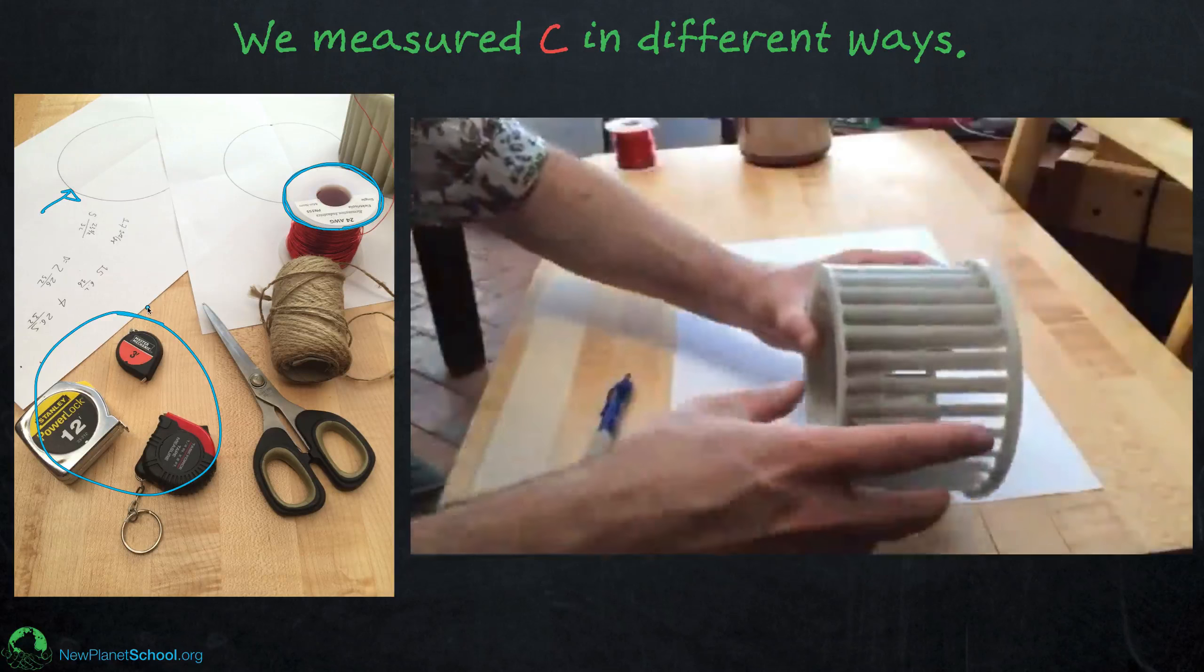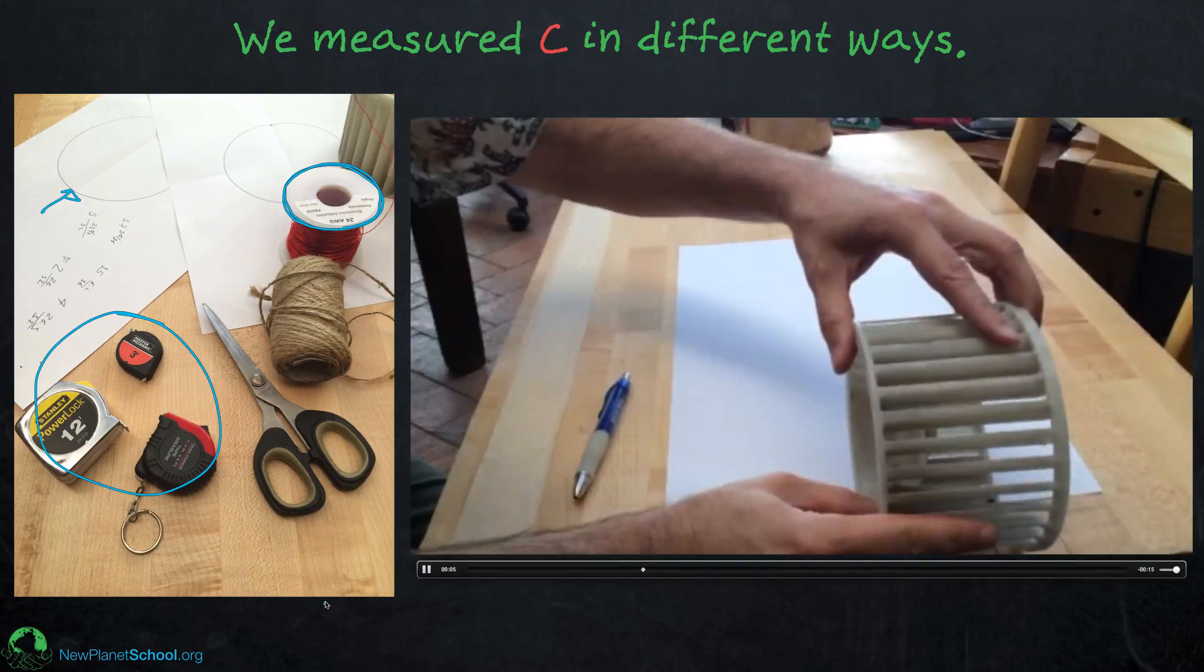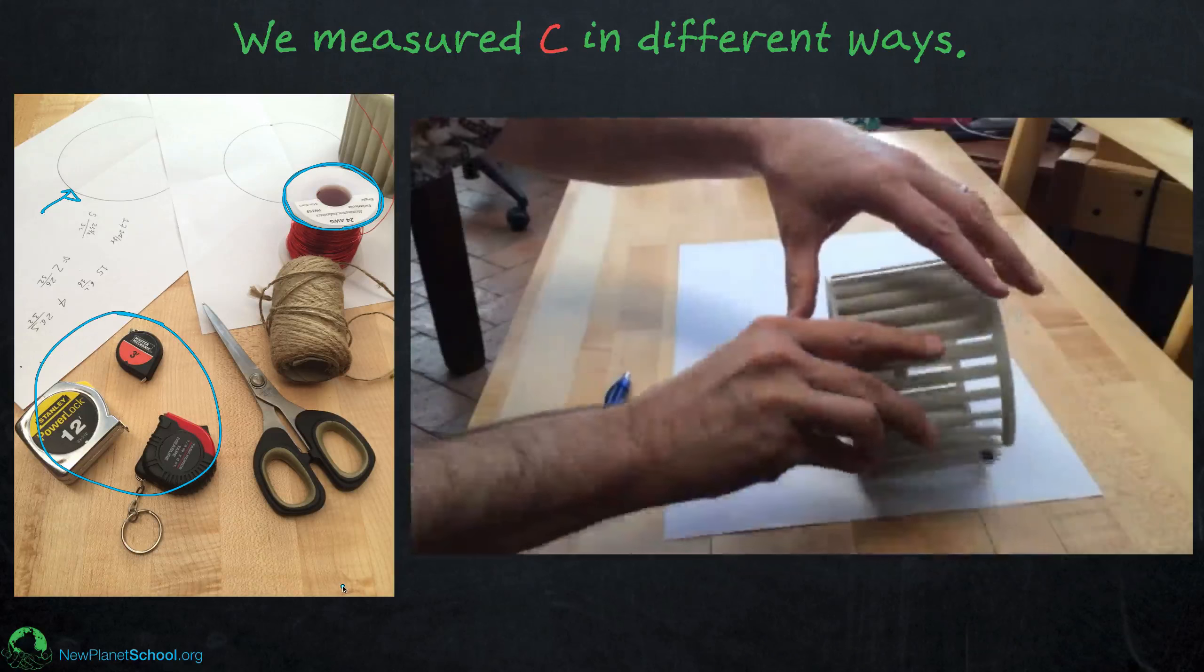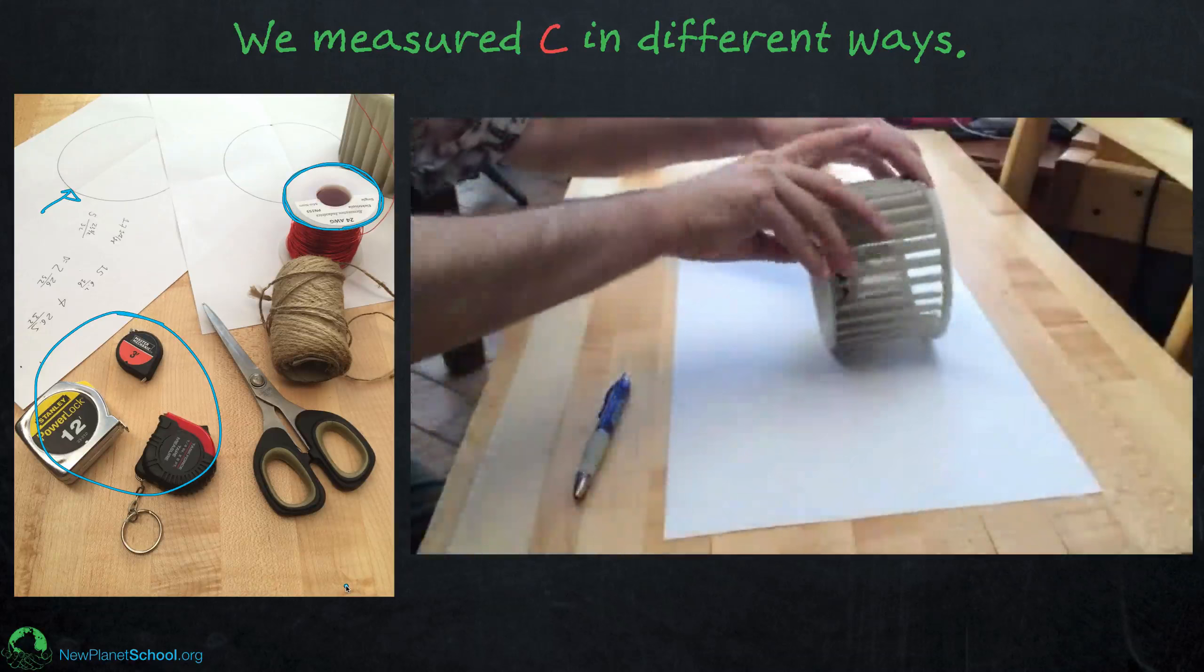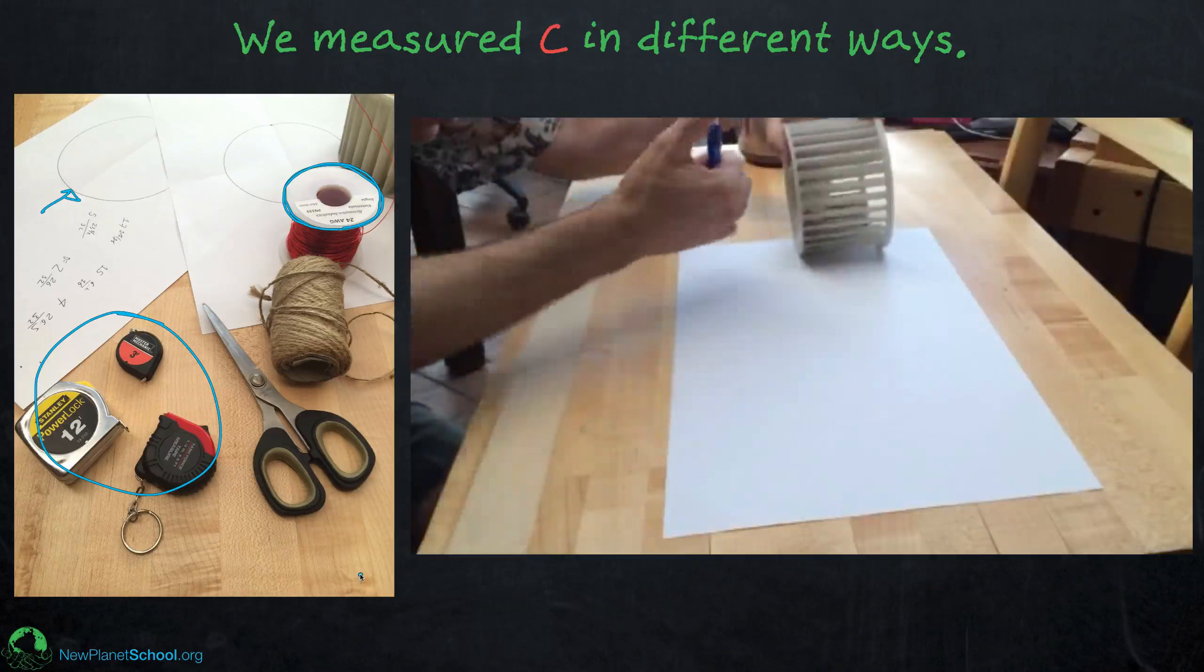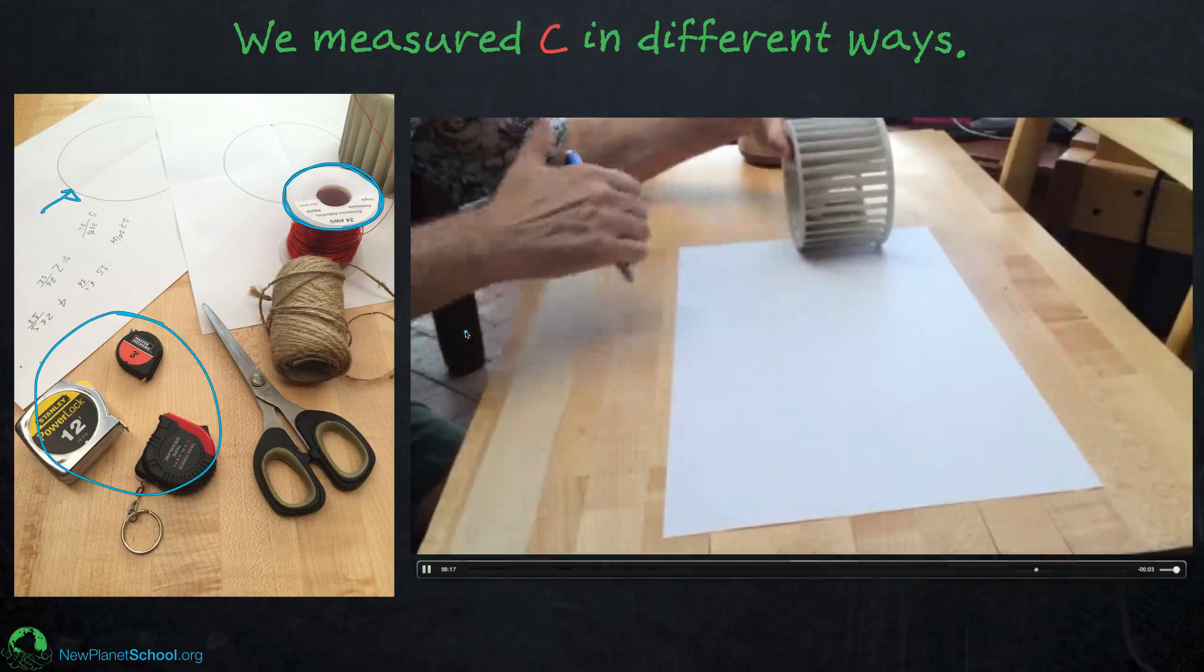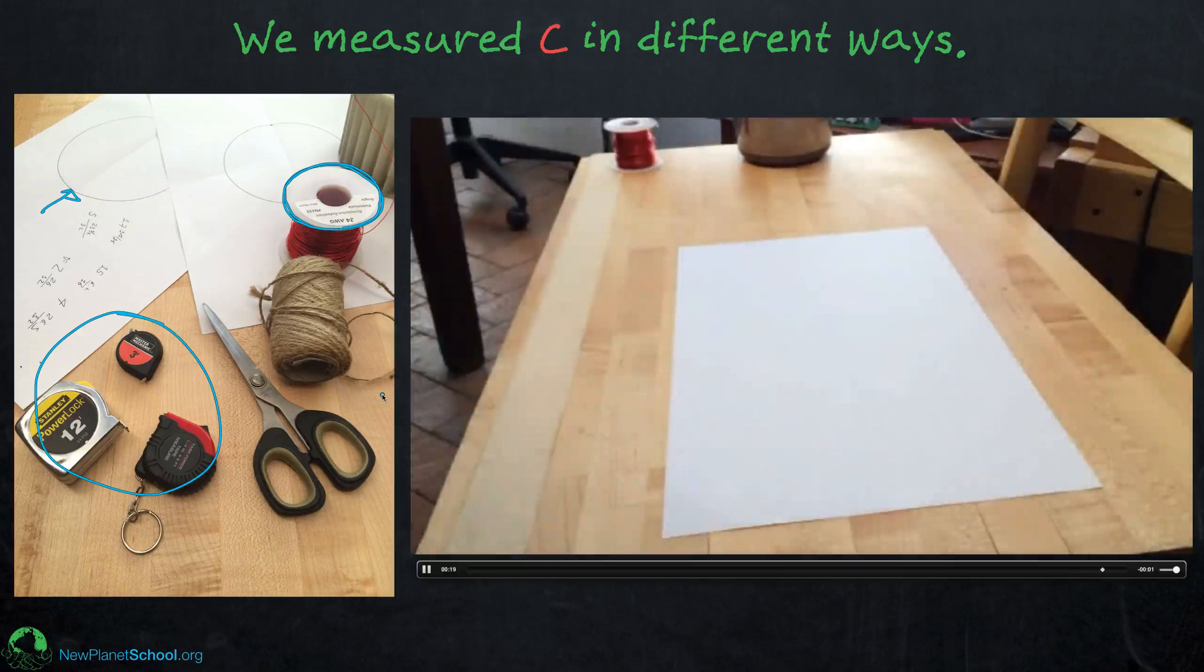Or even take the round object and mark it at some point and roll it down the paper and then you can just use a tape measure to measure that linear distance between the two places you mark. And you can get a pretty accurate value for the circumference. That tends to be the best method.